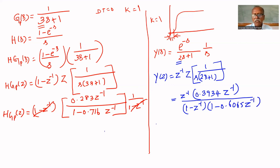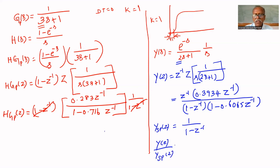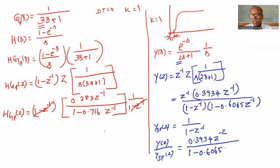Since y_sp(z) is a step input, y_sp(z) = 1/(1 − z^(−1)). Therefore y(z)/y_sp(z) equals (1 − z^(−1)) cancelled, giving 0.3934z^(−2) / (1 − 0.6065z^(−1)).